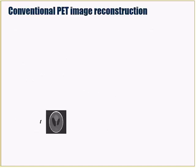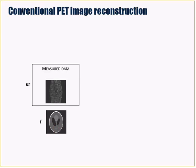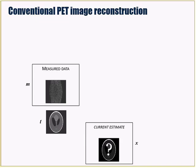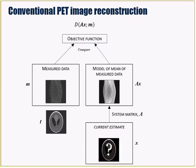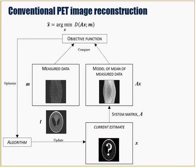Here's the reason why conventional PET reconstruction is not that great. We have ground truth parameters T. We're emitting back-to-back photon pairs from that ground truth distribution and getting measured data M. We're trying to estimate object representation parameters X from that noisy data, using our system model to predict data, compare it with an objective function — possible log likelihood — then iterate and update the estimate. We're trying to find the image X which, when forward modeled, minimizes some distance D between measured data M and our forward model — for example, the negative of the Poisson log likelihood.